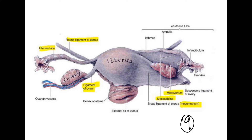Two relating to the ovary, three relating to the uterus itself, and four in the broad ligament. The broad ligament acts like a wax or a little blanket that falls all over the pelvic organs. And the broad ligament is divided into four parts.